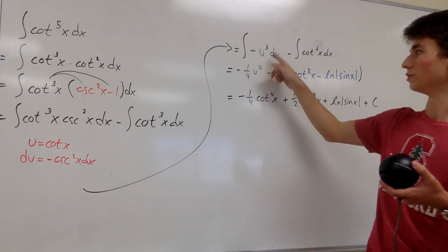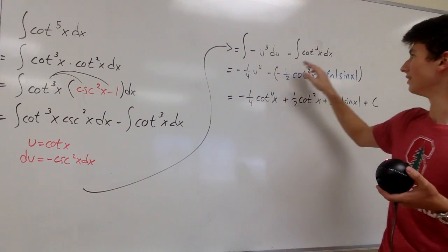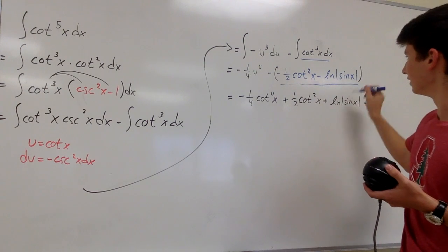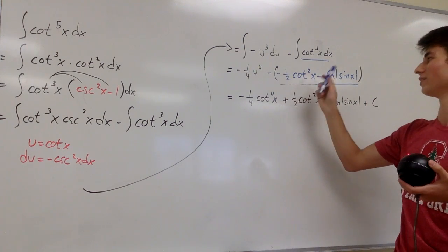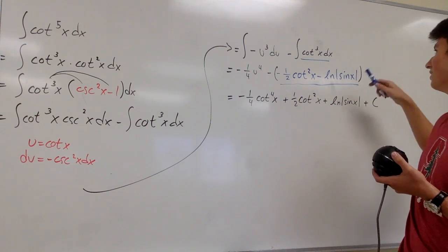The integral of u cubed is one-fourth u to the fourth, and then the integral of cotangent cubed of x right here is this bit right here, which is negative one-half cotangent squared of x minus the natural log of the absolute value of sine of x.